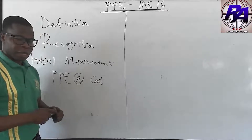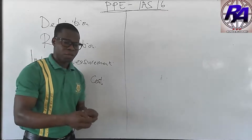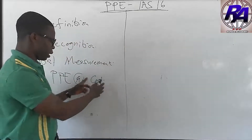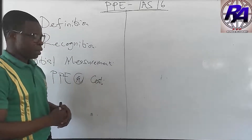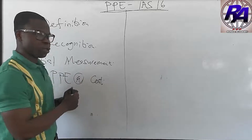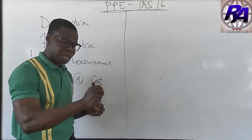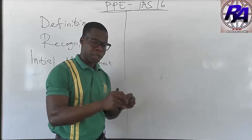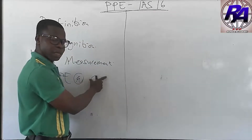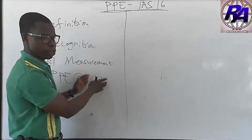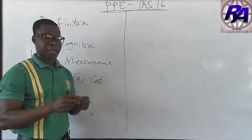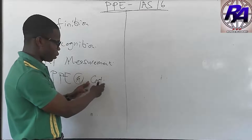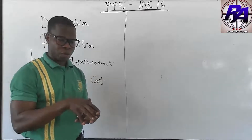Cost is defined as the cash and cash equivalent paid as consideration under a particular transaction. In this case, we are looking at cost as cash and cash equivalent — the amount received at the acquisition date or the period in which the asset was acquired. All costs incurred at acquisition should form part of the cost of the property. The standard has given us guidelines for the elements of cost — what items constitute cost.